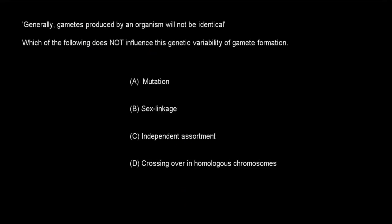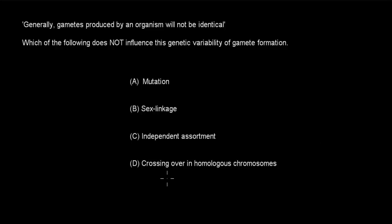Next question. Generally, gametes produced by an organism will not be identical. Which of the following does NOT influence the genetic variability of gamete formation? A. Mutation. B. Sex linkage. C. Independent assortment. D. Crossing over on homologous chromosomes. Pause the video and attempt the question.